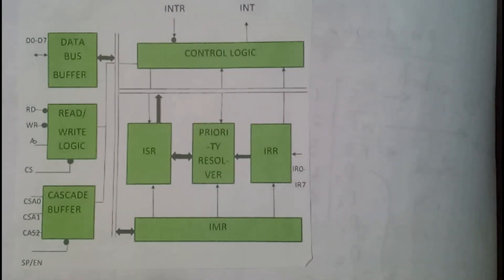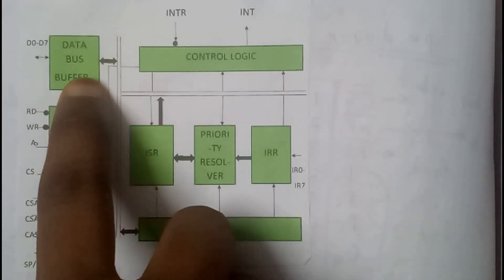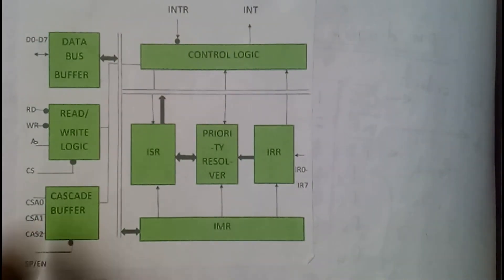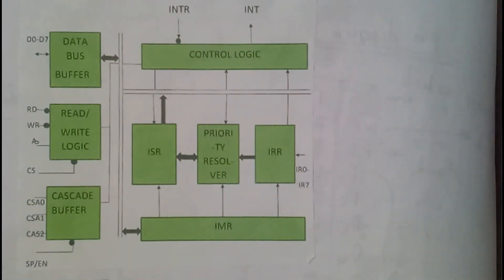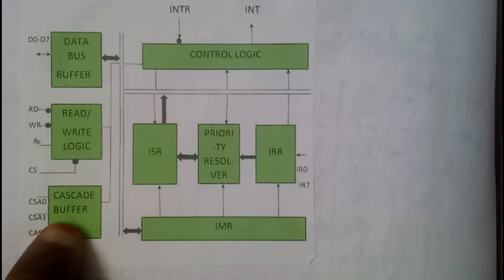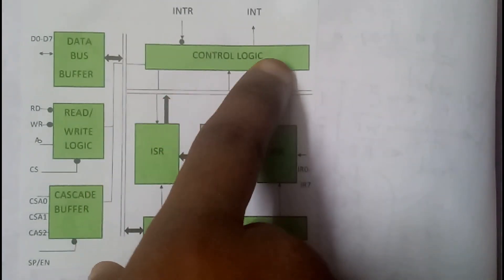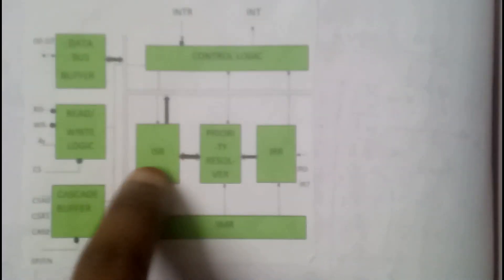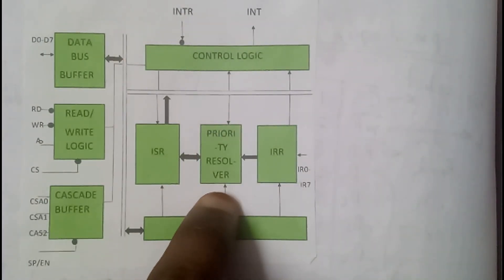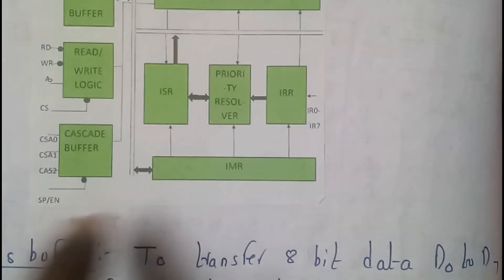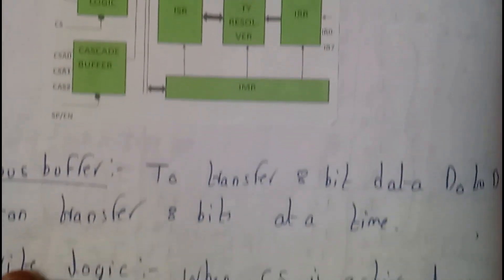Now it is absolutely clear. So the first block will be data bus buffer. Below that we will be having read and write logic. Below that we will be having cascaded buffer. On the other side we will be having control logic, ISR, priority result viewer, IRR and IMR. We will be going through one after the other block, don't worry.